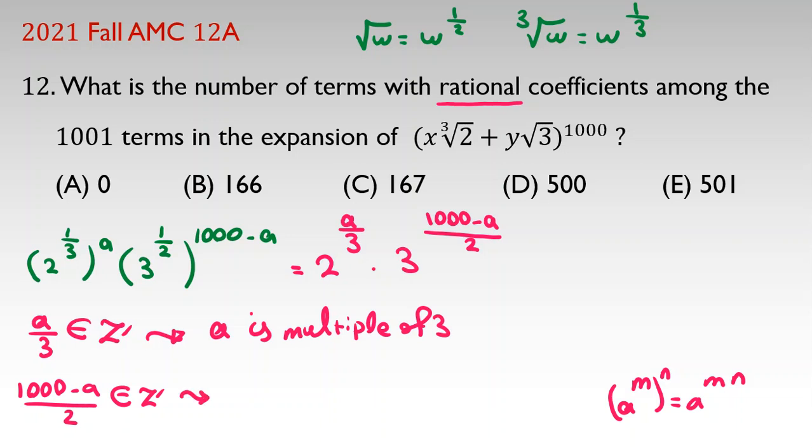And, from second one, 1000 minus a should be even, because over 2 should be integers. So, this term should be even. So, because 1000 is even, a should be what? A is even or multiple of 2.